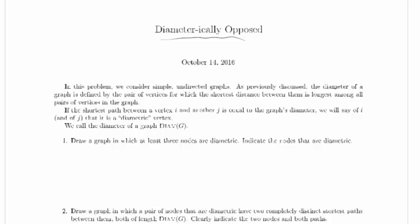As previously discussed, the diameter of a graph is defined by the pair of vertices for which the shortest distance between them is longest among all pairs of vertices in the graph. So we've got a graph with a bunch of vertices, and some pair of vertices and their shortest distance is longer than the shortest distance between any other pair of vertices in the graph. They're the diameter because that's as far apart as you can get in the graph.